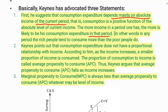In other words, rich people tend to consume more than poor people. Those with higher income consume more, and those with lower income consume less. So there is a positive relationship between income and consumption.